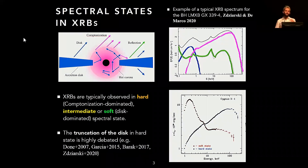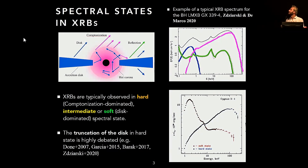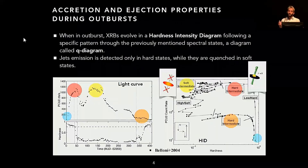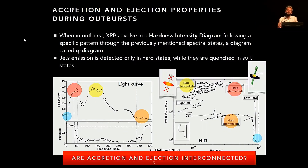There is also a third spectral component in X-ray spectra of X-ray binaries, which is reflection, due to the reprocessing of the Comptonization spectrum from the corona by the accretion disc. One interpretation of the hard state is that the disk is truncated far away from the black hole, while in the soft state it reaches the ISCO — though this is highly debated. Very interestingly, as we move from hard to soft state during an outburst, not only the accretion flow evolves but also the jet properties: jets are only observed in hard states, while in the soft state they are quenched.